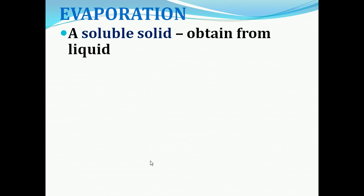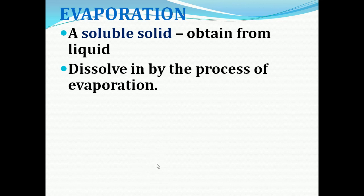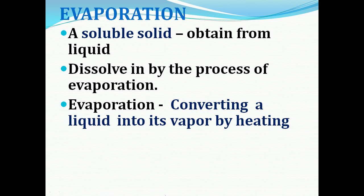First is evaporation. By this technique we can obtain a soluble solid from the liquid in which it is dissolved, by the process of evaporation. Evaporation is the process of converting a liquid into its vapor by heating. When we are heating the liquid it gets converted into vapor. This process is called evaporation, by which we can separate the soluble solid from the liquid.